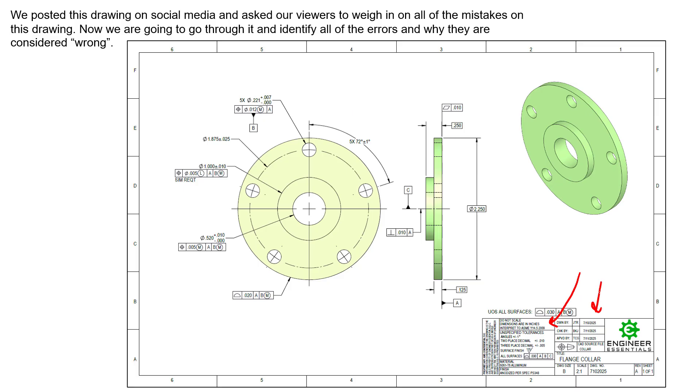Even though this drawing was created in 2025, we can certainly and very defensibly call out the 2009 standard or the 1994 standard and be perfectly legal. You can operate on any single revision for eternity. You just have to call out that year on the drawing itself. If you don't call out a year on the drawing, it does default to the most recent standard, which in this case would be the 2018 standard.